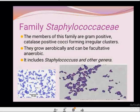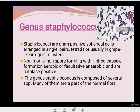The Staphylococci grow aerobically — in the presence of oxygen — and can be facultatively anaerobic, meaning they can also grow in the absence of oxygen. All staphylococci are gram-positive spherical cells arranged in single pairs, tetrads, or usually in grape-like irregular clusters. They are non-motile and non-spore-forming microorganisms with limited capsule formation; 90% of staphylococci have the ability to form capsules.